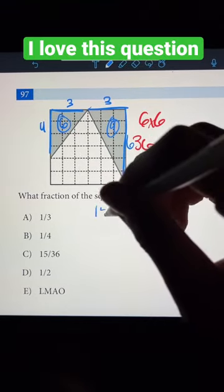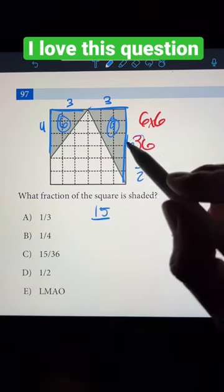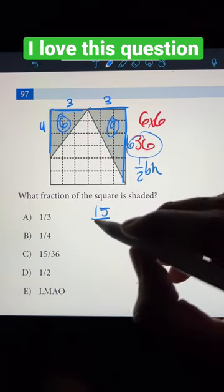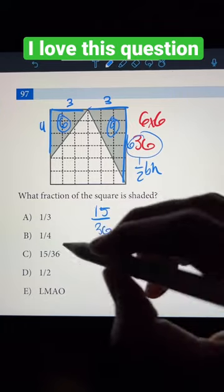So 6 plus 9 is going to be 15, and since there are 36 total squares in this entire figure, we have to divide 15 by 36, and we can circle C.